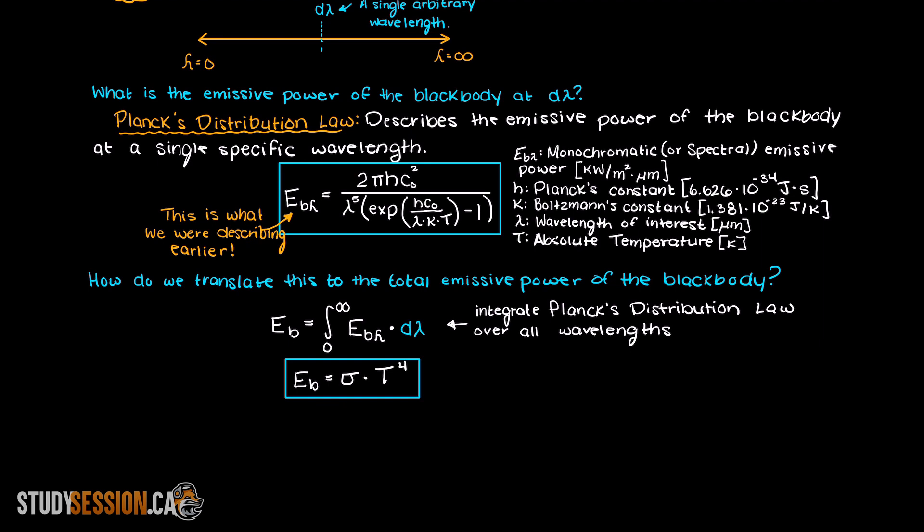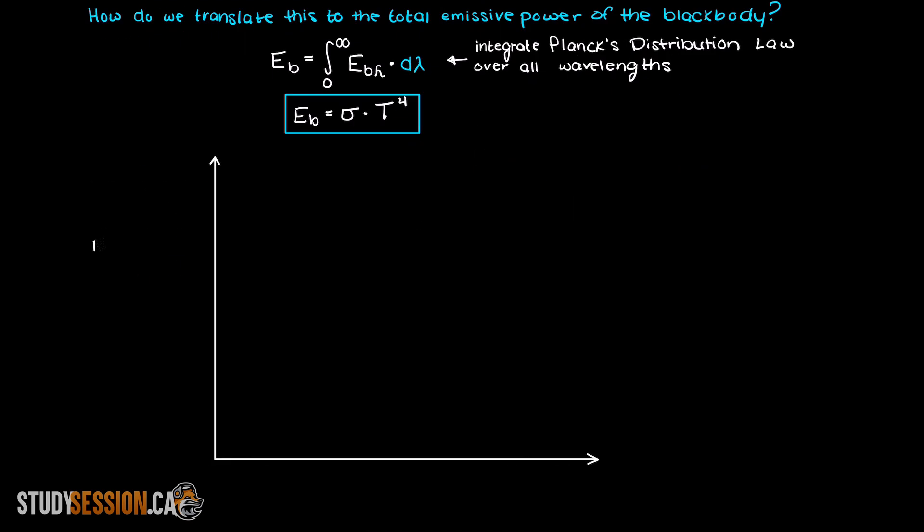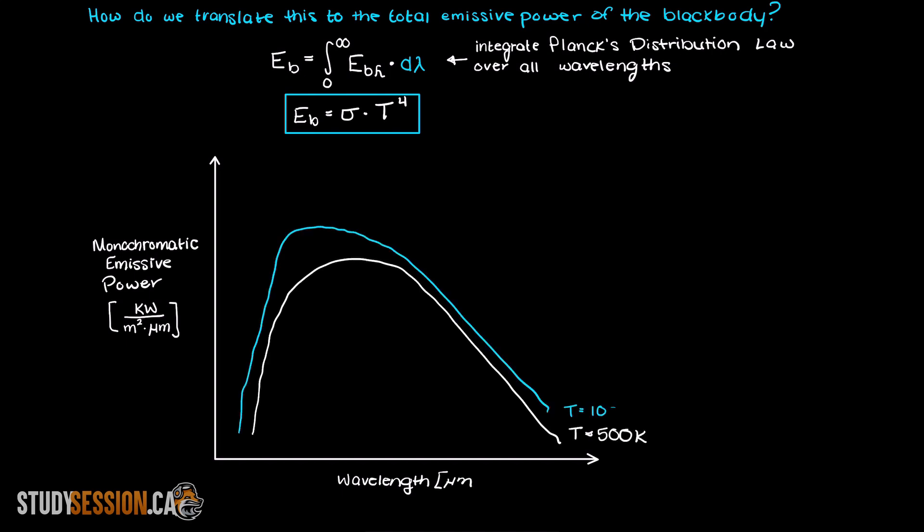Through Planck's distribution law, we can do something pretty cool as well. By holding our temperature constant, we can create monochromatic or spectral distribution curves. These curves detail the monochromatic or spectral emissive power at a specific wavelength for some given temperature.